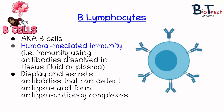The humoral immune response is associated with the serum or the plasma and involves the action of antibodies secreted by B-cell lymphocytes. We will address antibodies in another short video after this one, but for now I just want to explain exactly how B-cells work.